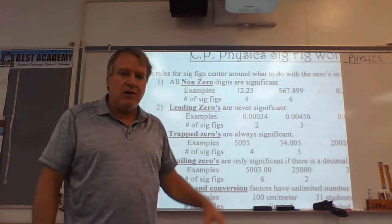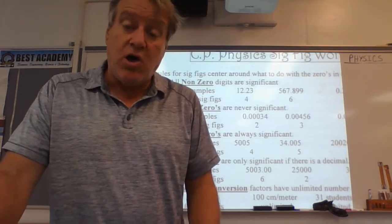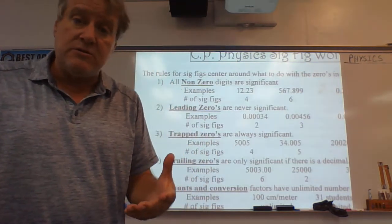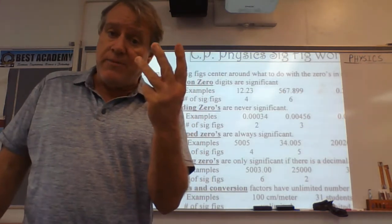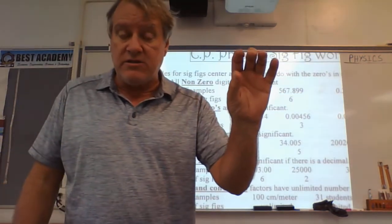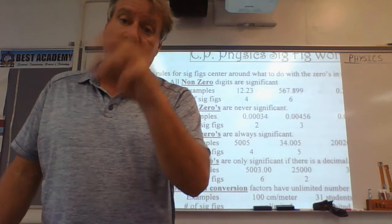Anyway, anything that's not a zero is significant. So all you have to worry about are the zeros. Easy, right? Now, zeros can only be in three places. They can be in front of numbers, between numbers, or at the end of numbers.